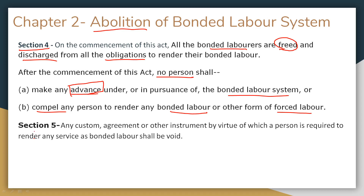Section 4 thus abolishes the bonded labor system entirely — all obligations of bonded laborers are extinguished, no advance can be given under this system, and no one can be forced to perform bonded labor. Section 5 further declares that any custom, agreement, or instrument under which bonded labor service was rendered is void.